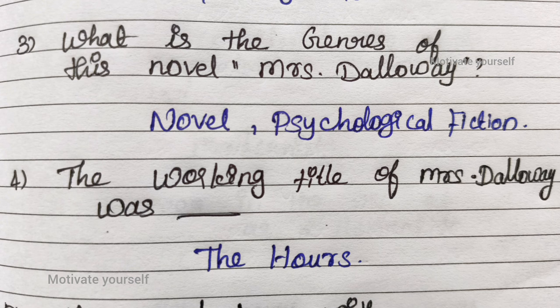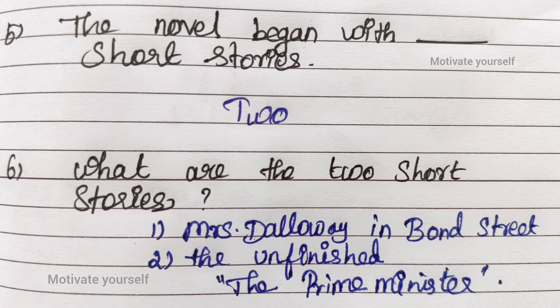Fourth question: The working title of Mrs. Dalloway was 'The Hours'. Fifth question: The novel began with two short stories. Sixth question: What are the two short stories? First, Mrs. Dalloway in Bond Street. Second, The Unfinished — The Prime Minister.